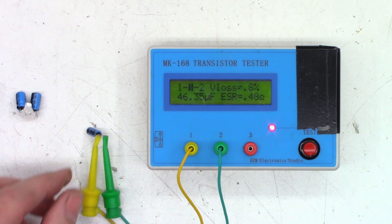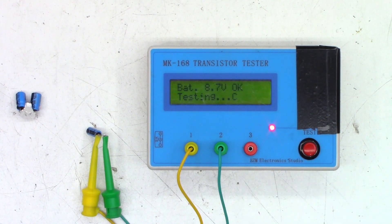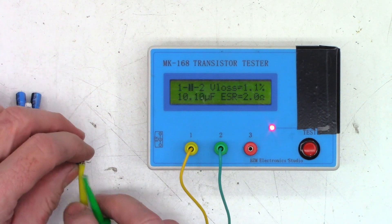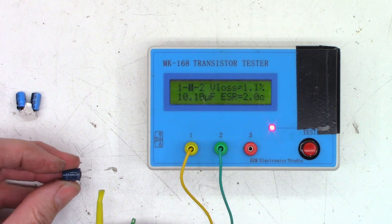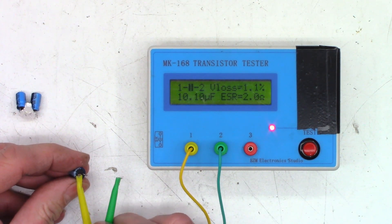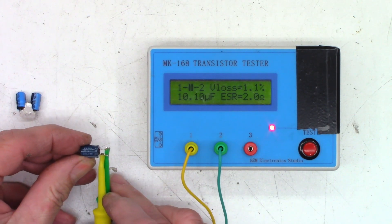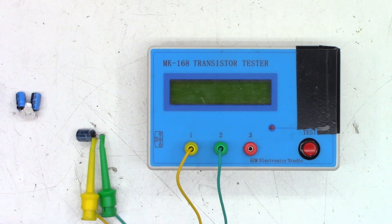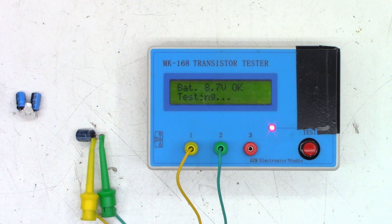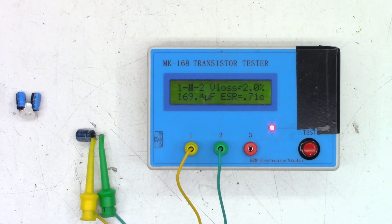Now this one is a 10 at 50 microfarads: 10.10 microfarads measured with an ESR of 2 ohms, which is absolutely perfect, and a V loss of 1.1 percent, absolutely perfect. This one is a 220 at 25 volts. It's a little low on the microfarad at 169.4 with an ESR of 0.71, which is just a hair on the high side, but a V loss of only 2 percent, once again very happy with that.